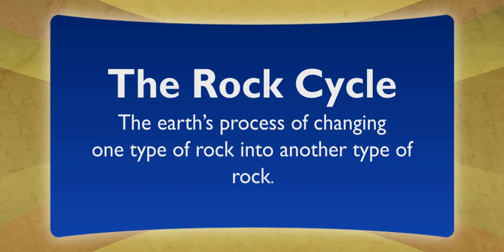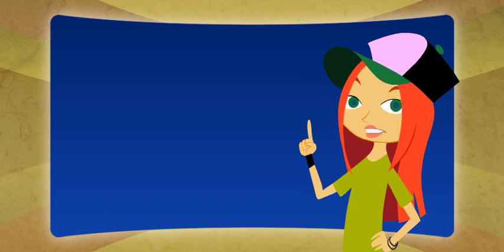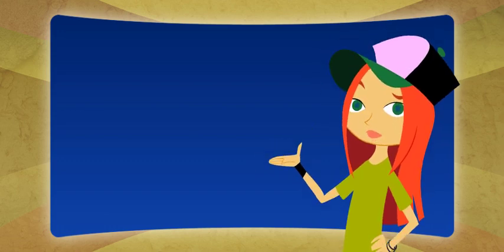The rock cycle is the Earth's process of changing one type of rock into another type of rock. Okay, different types of rock music I know about, but different types of rocks? Three, actually.